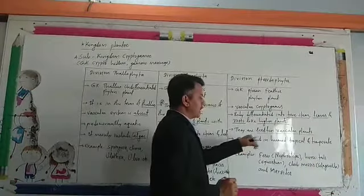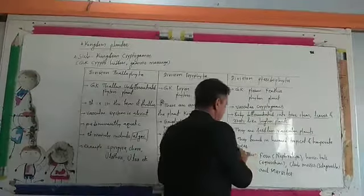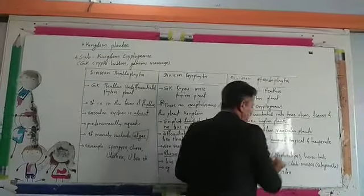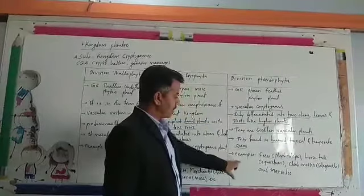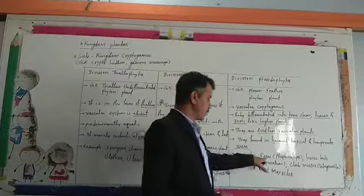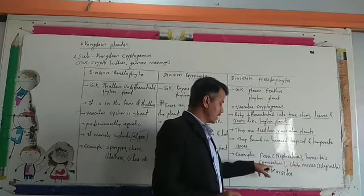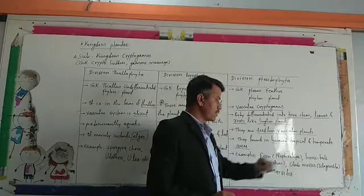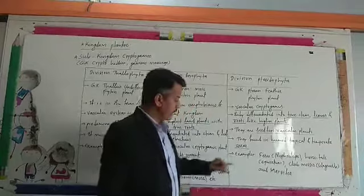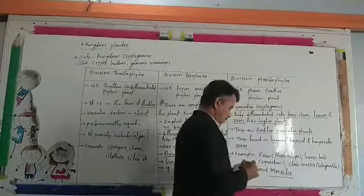They are found in humid, tropical, and temperate areas. Examples include Fern, which is also called Nephrolepis; horse tail, that is Equisetum; club moss, that is Selaginella; and the last example is Marsilea.